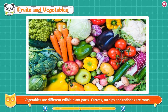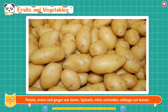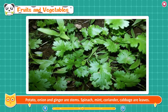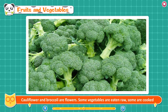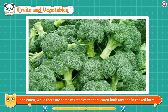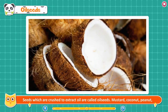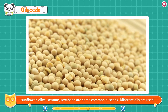Vegetables are different edible plant parts. Carrots, turnips, and radishes are roots; potato, onion, and ginger are stems; spinach, mint, coriander, and cabbage are leaves; cauliflower and broccoli are flowers. Some vegetables are eaten raw, some are cooked, and some are eaten both raw and cooked. Oil Seeds. Seeds which are crushed to extract oil are called oil seeds. Mustard, coconut, peanut, sunflower, olive, sesame, and soybean are some common oil seeds. Different oils are used for cooking food in different parts of India.